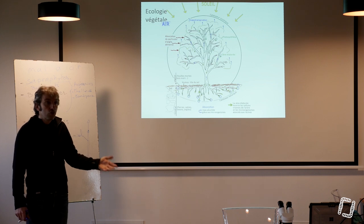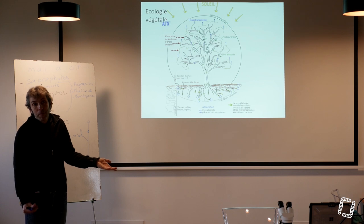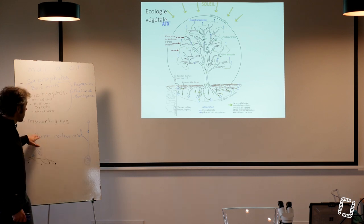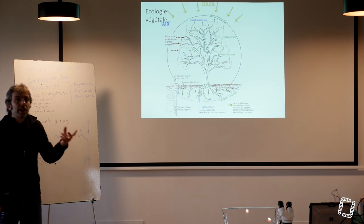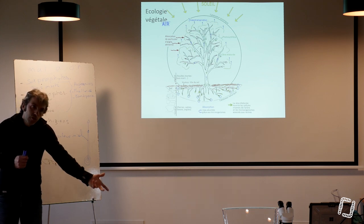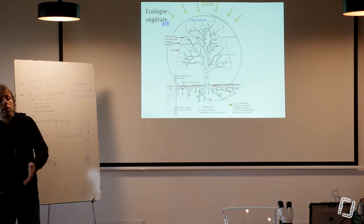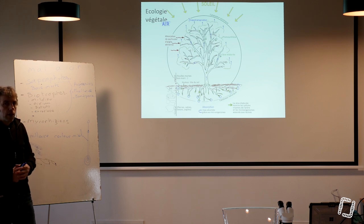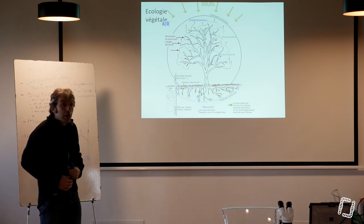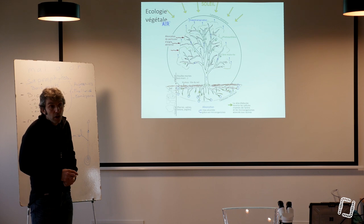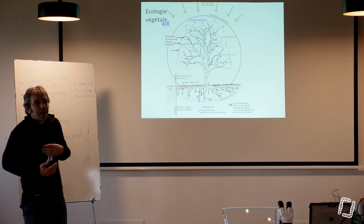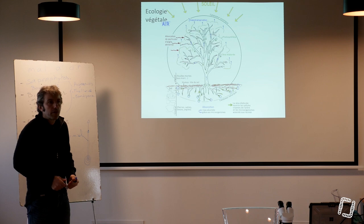On a également ce que l'on appelle des exudats racinaires. La racine va libérer dans le sol du sucre pour devenir appétante pour les micro-organismes. Les micro-organismes symbiotiques comme les mycorhizes vont se fixer à la plante pour récupérer ce sucre. En échange, ils vont pomper de l'eau et des sels minéraux pour stimuler la plante à fabriquer encore davantage de sève. Plus votre plante est capable de fabriquer des sucres et de la sève élaborée, plus elle a une capacité à faire lien avec son environnement.